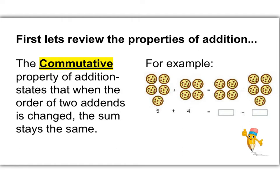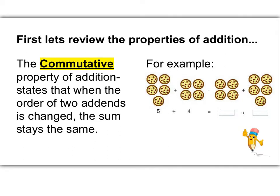First let's review the Properties of Addition. The Commutative Property of Addition states that when the order of two addends is changed, the sum stays the same. Here you see five pizza pies and four pizza pies. Five plus four is nine, and four plus five is still nine. It does not matter which number you add first, they're still going to equal nine. That's what the Commutative Property of Addition is.